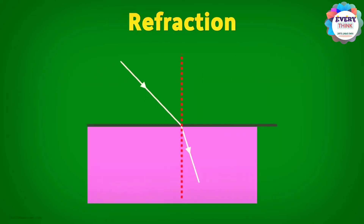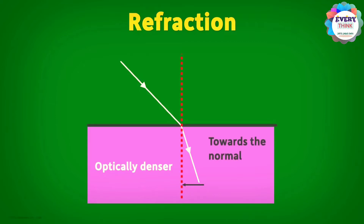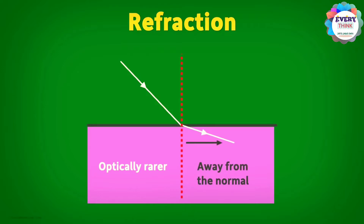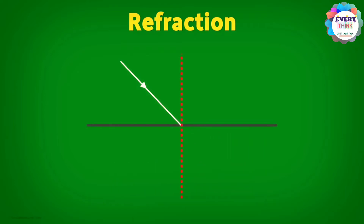If the refractive medium is optically denser compared to the incident medium, then the refracted ray will bend towards the normal. And if it is optically rarer, it will bend away from the normal. Note that refraction occurs only when the light is incident obliquely on the surface. When the incident light is perpendicular to the surface, it does not change its direction.